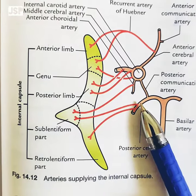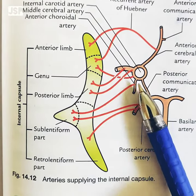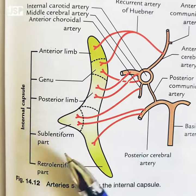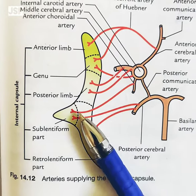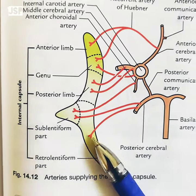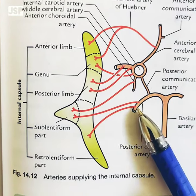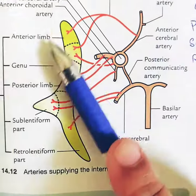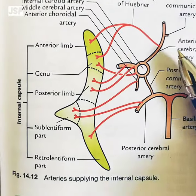The retrolentiform part is also supplied by a branch from the posterior cerebral artery. This concludes the arterial supply of the internal capsule.